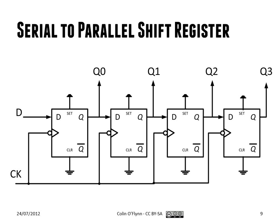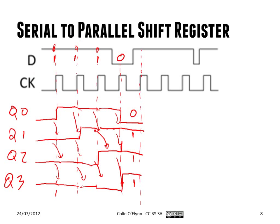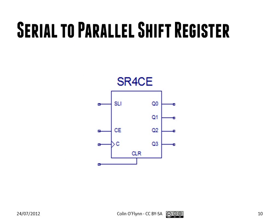That's just showing another example. If there's a little circle on the clock input, that means it's negative edge triggered — whatever data is on the falling edge is what will be sampled. There are also simple blocks you can drop down in the Xilinx tool. This is one example of a serial-to-parallel shift register — it has a serial input, clock enable tied to VCC, a clock input, and an asynchronous clear. When you start shifting data in, it'll appear on Q0 to Q3.